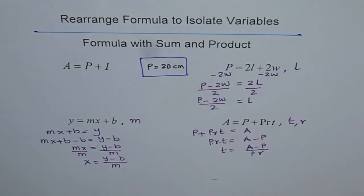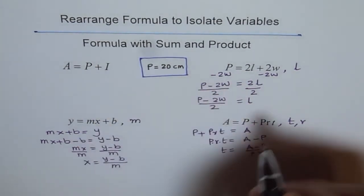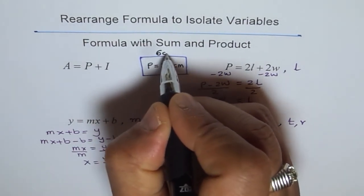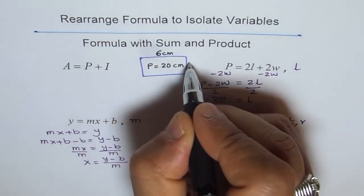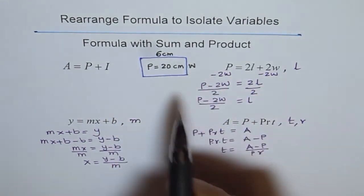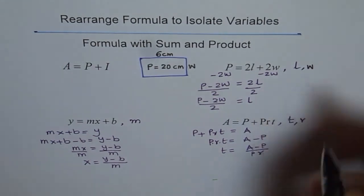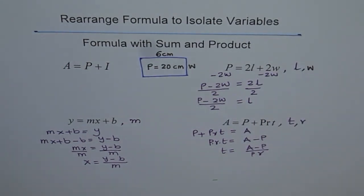So, 20 centimeter is the perimeter of this rectangle. So, if the length of this is 6 centimeter, you have to find what W is. So, for that, you need to isolate for W. So, that is what you need to do.